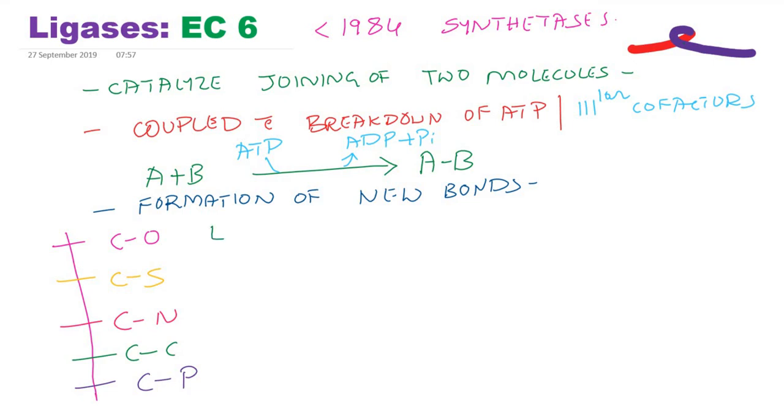This will become EC 6-1. Carbon-sulfur will become EC 6-2, like this: 6-3, 6-4, 6-5. There are two more subclassifications.